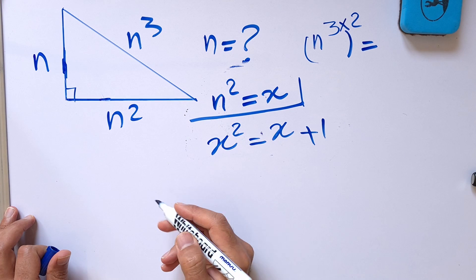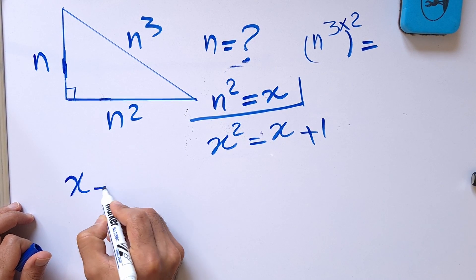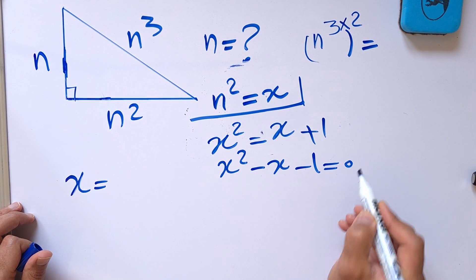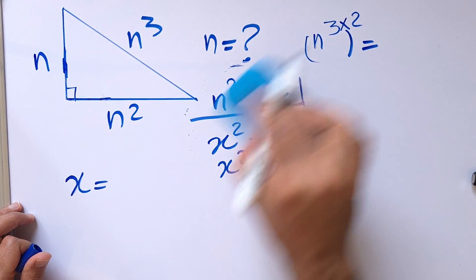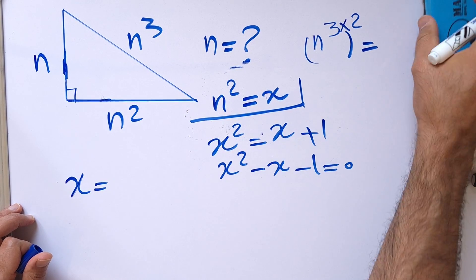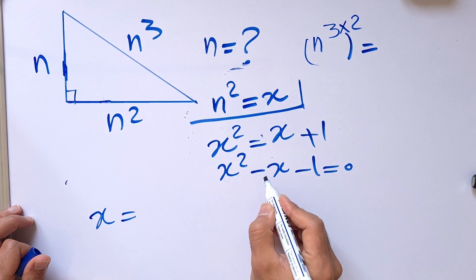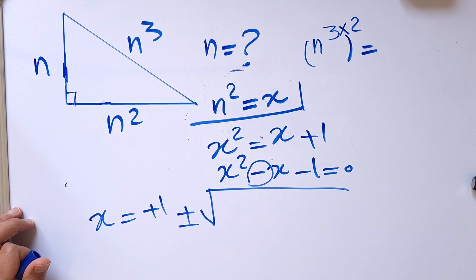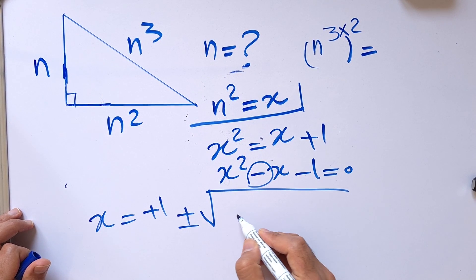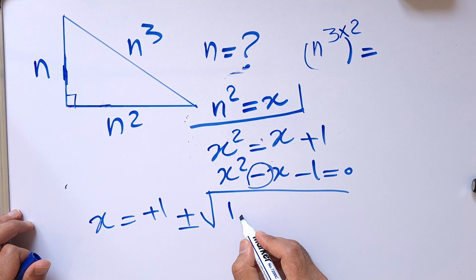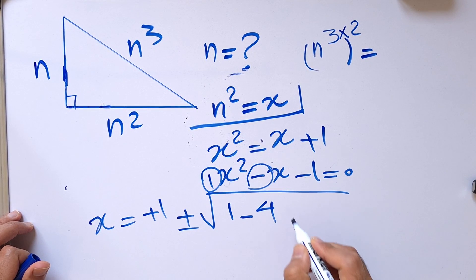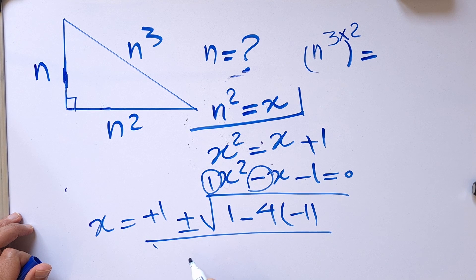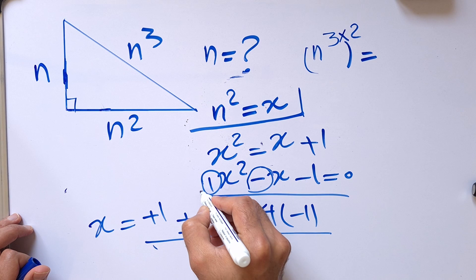To solve the quadratic equation, let's put everything on one side: x squared minus x minus 1 equals 0. Using the quadratic formula, x equals negative b plus or minus square root of the discriminant, divided by 2a. Here b is negative 1, a is 1, and c is negative 1. The discriminant is b squared minus 4ac, which is 1 minus 4 times 1 times negative 1, giving us 1 plus 4 equals 5.